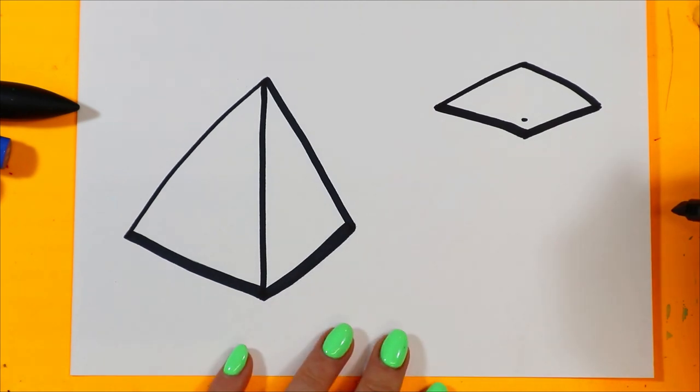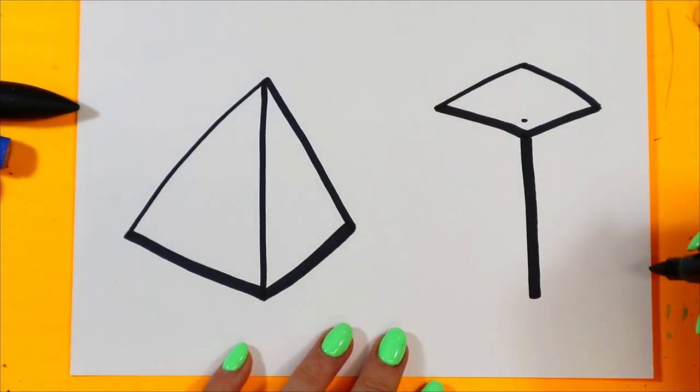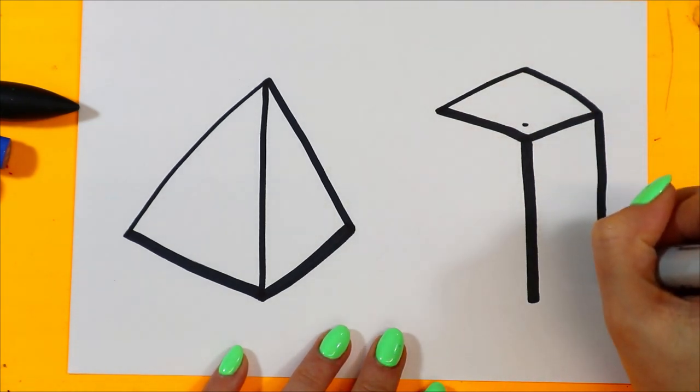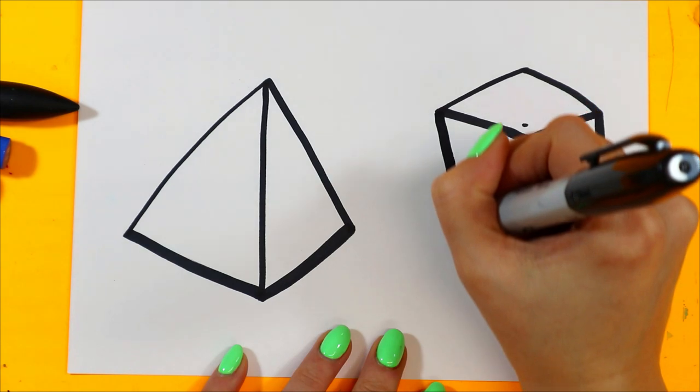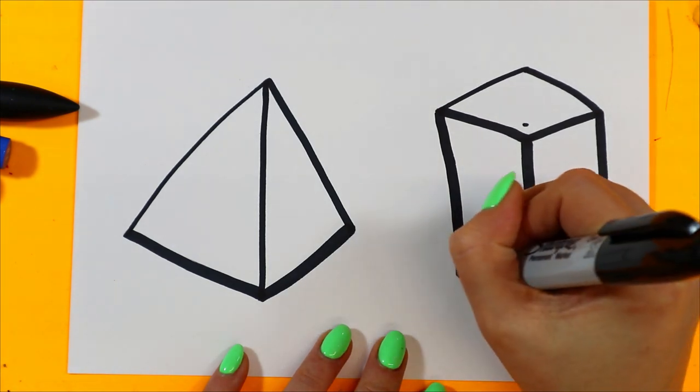And we're going to do something similar like we did with the pyramid. We're going to draw one line down the front here. That will determine the height. And then we'll add these two lines, but they're going to be shorter. Connect to the bottom.